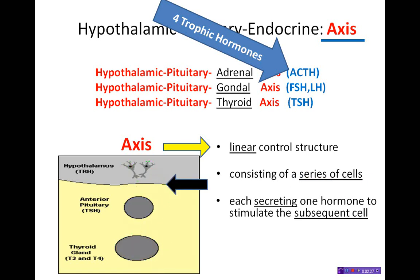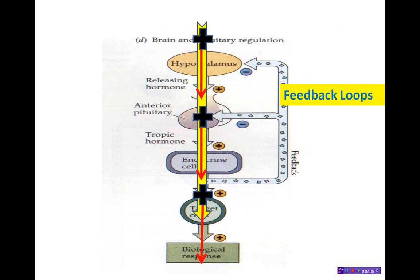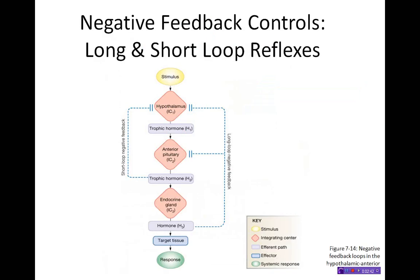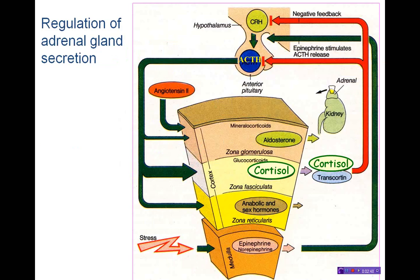Looking at this animation, notice that there is a looping back of hormones from the thyroid gland — what we call a feedback loop. Most feedback loops in the axis are inhibitory, and there are long loop reflexes and short loop reflexes.